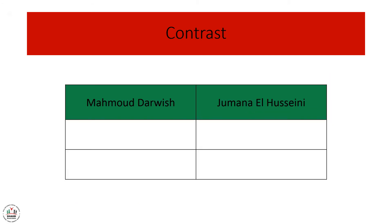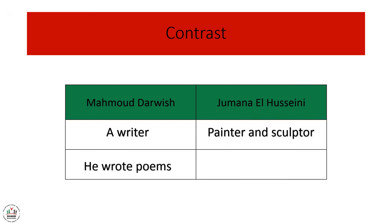Now we will contrast. As we said, contrasting means writing the differences. First, Mahmoud Darwish is a writer, while Jaman al-Hussaini is a painter and sculptor. This is the first difference. The second one: Mahmoud Darwish wrote poems, while Jaman al-Hussaini made sculptures.